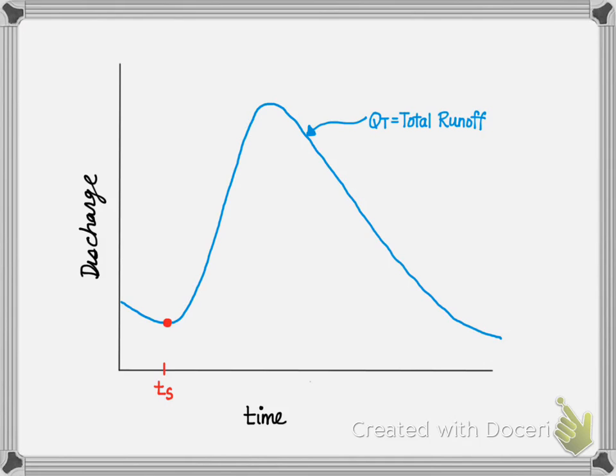The lowest point on the hydrograph, as highlighted with the red dot, is the point where direct runoff starts. The time is referred to as the start time, or TS.